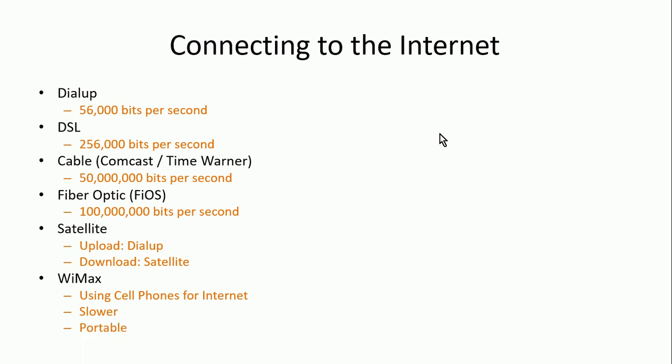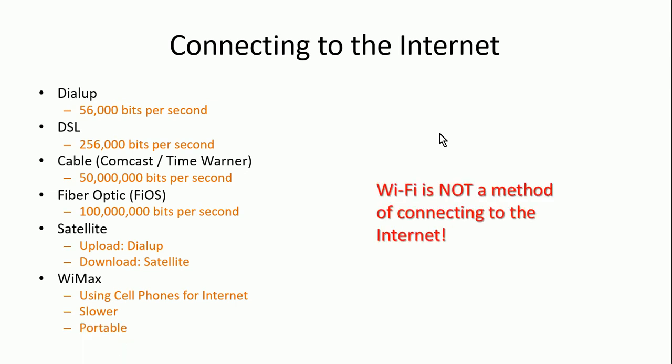I want to make absolutely clear that Wi-Fi is not a way of connecting to the internet. Wi-Fi is a way to connect to a network, but not connect to the internet. Every time I give a test on this topic, students always put Wi-Fi. If you're at a coffee shop, you connect to their Wi-Fi network, but their network is then connected to the wider internet — you're connecting through that network to get to the internet.